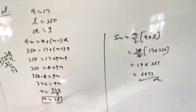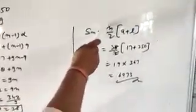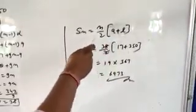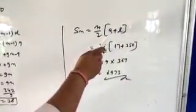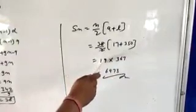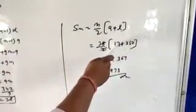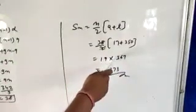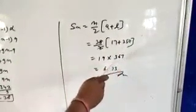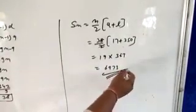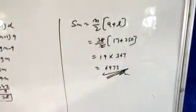SN equal to N upon 2 bracket A plus L, where L is the last term. N equal to 38 upon 2, A is 17 plus 350. 2 divided by 38 equal to 19 into 17 plus 350 equal to 367. 19 multiply by 367 equal to 6973. The sum of Nth term is 6973.